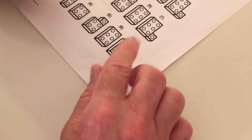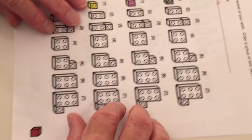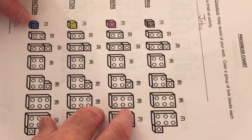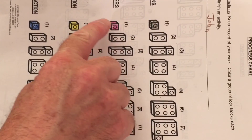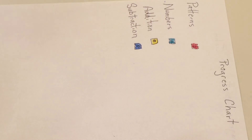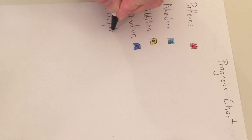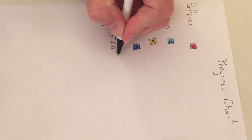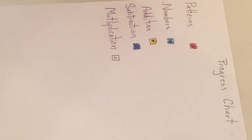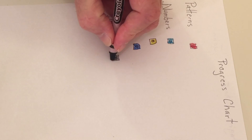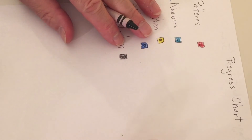Now we're going to keep track of what we've done — we're going to mark our progress chart. Here's the progress chart I downloaded from the internet. We've done patterns, ones, numbers, addition, subtraction, and we did multiplication. If you're making yours from a plain white piece of paper, we can do that — let's write down multiplication and put our little block down, make that black. We've marked our progress chart — nice job.